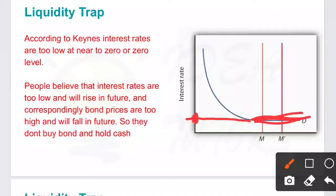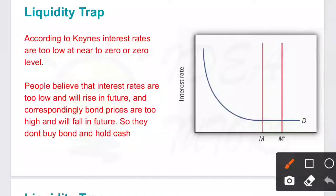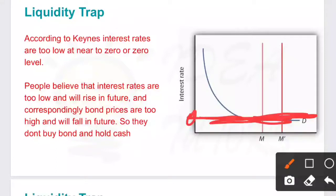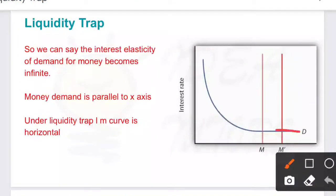For now they will not buy any bond or invest anywhere else. The crux is they will hold all the cash because holding cash is more beneficial when interest rate is zero. So in liquidity trap, interest rates are zero and people are holding all the cash regardless of what the money supply is. Even if money supply is increasing, the interest rate is not decreasing. So the money demand curve becomes parallel to the x-axis — it becomes a horizontal line — and we can say that the interest elasticity of demand becomes infinite.